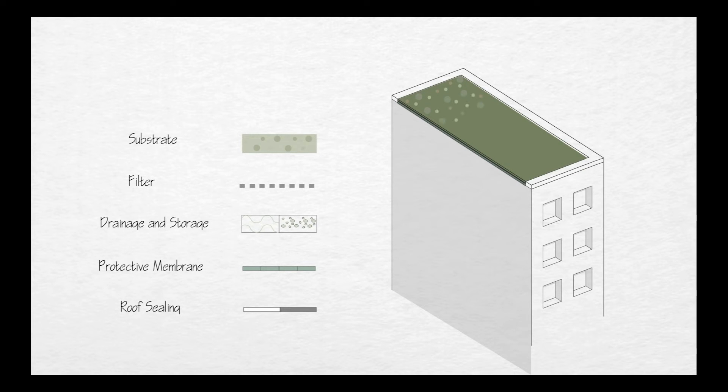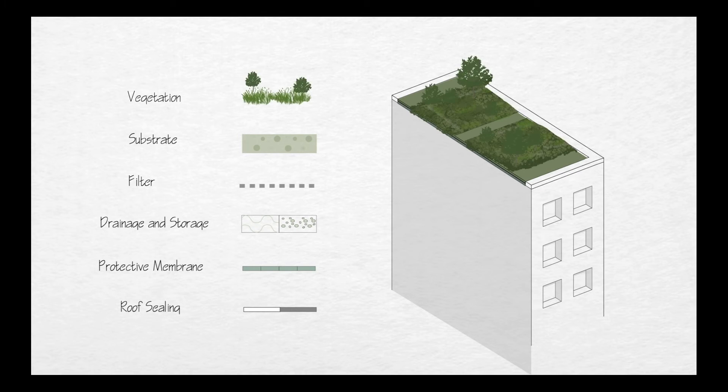The substrate type and amount depends on the plant vegetation. These allow for roofs to grow and store water, minerals, and nutrients. Finally, the vegetation is planted.